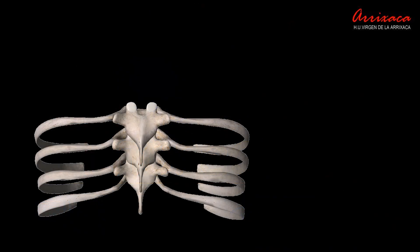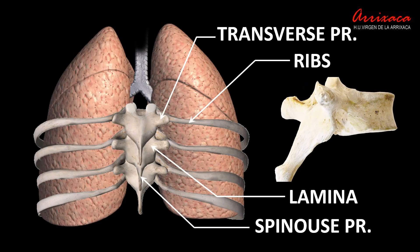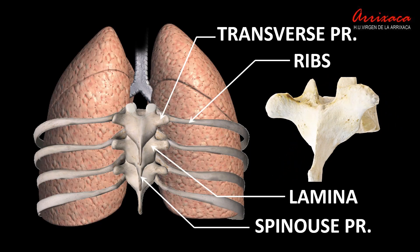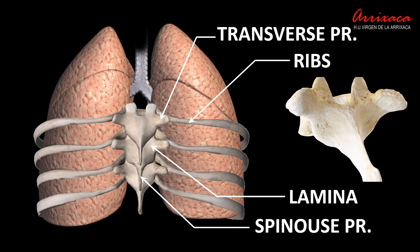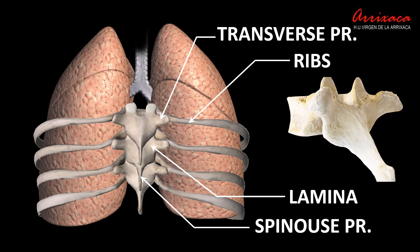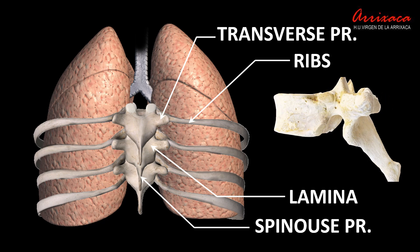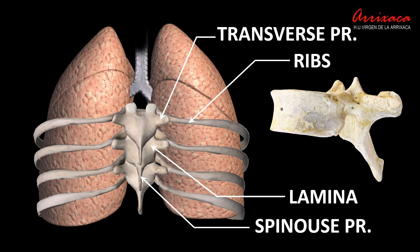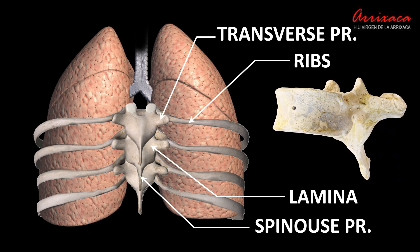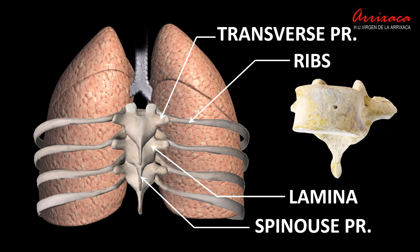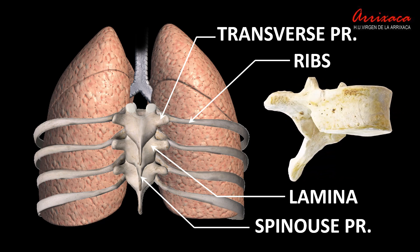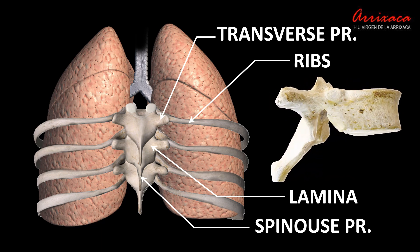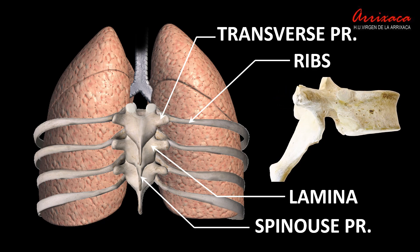The thoracic vertebra is formed by a prominent triangular spinous process with a characteristic oblique direction towards the caudal direction, two pedicles, two laminae that overlap with the superior and inferior ones like the tiles of a roof, four articular processes — two superior and two inferior — and the additional bony structure of the ribs.